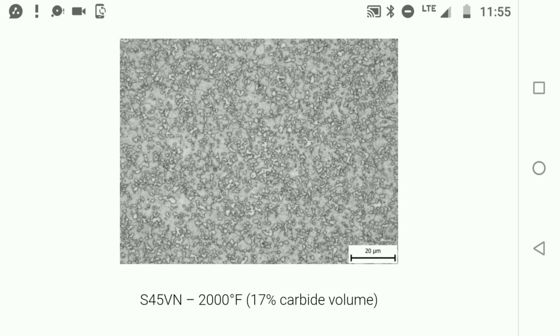When you heat treat it, if you take a point counting system and add up what percentage of that matrix is the steel or iron, and what percentage is actual carbide clusters inside there, that's what we mean by carbide volume. So 17% of that matrix, if you add it all up with a point counting system, would be this carbide.